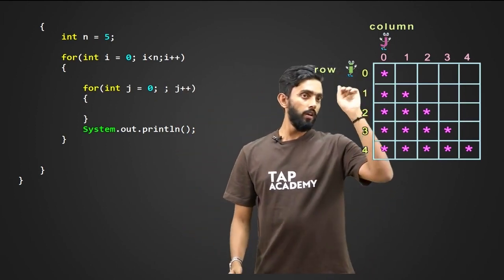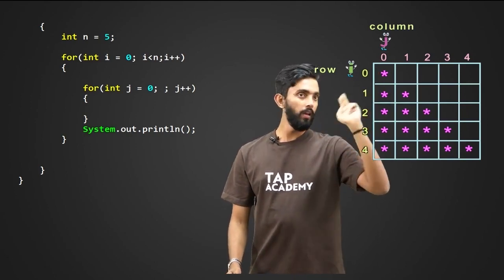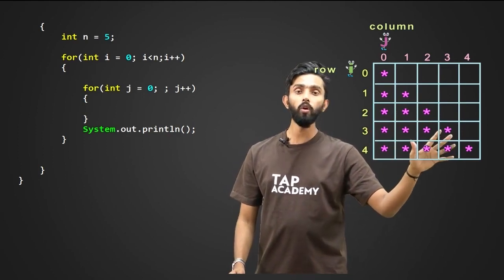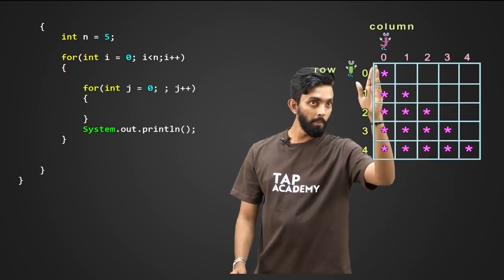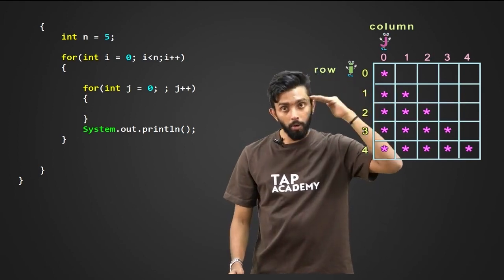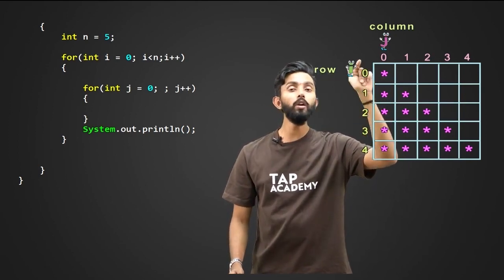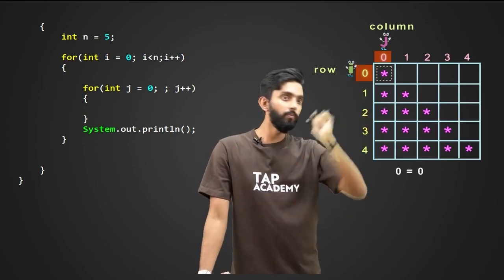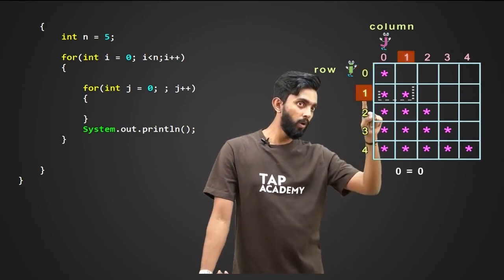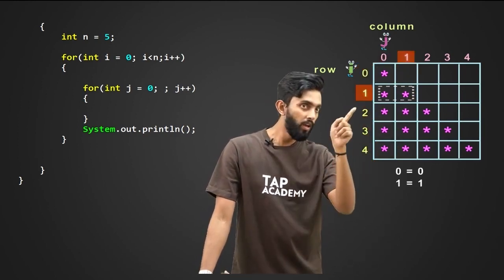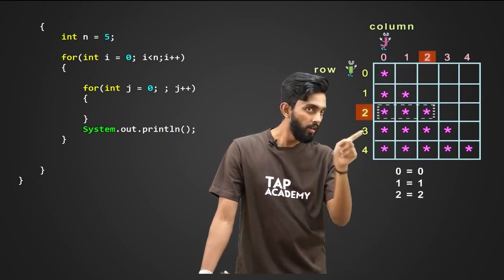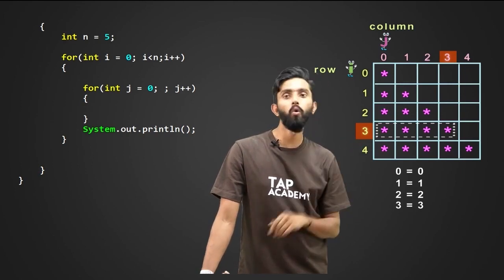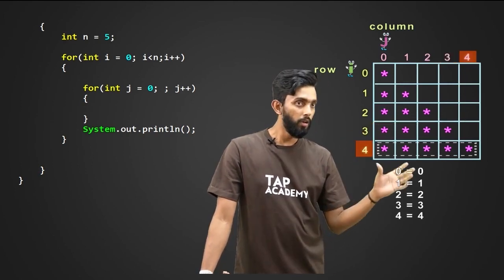Now, if you notice, in the zeroth row, there is one column. In the second row, two columns. Third row, three columns. Fourth row, fourth column. Fifth row, five columns. In other words, the number of columns, or one more way to look at it is the number of stars in each column is equal to the number of the row. That's what I am also showing. See here. Zero, zero. One, one. Two, two. Three, three. Similarly, four and four.